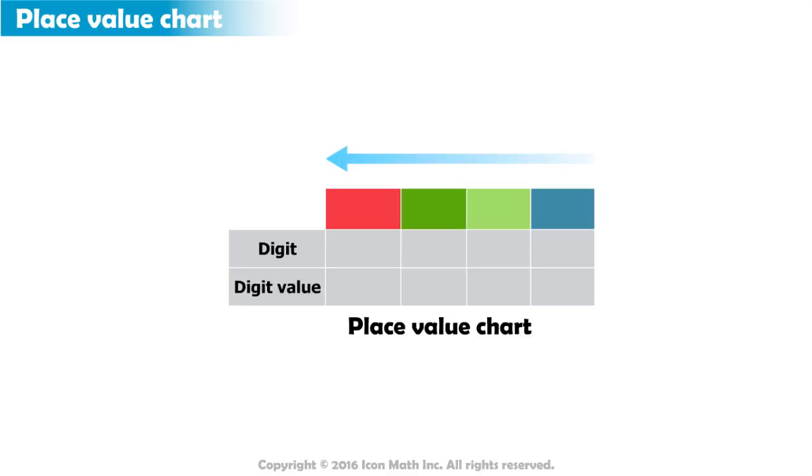Starting from right to left, the first place or position represents the ones. The second represents tens. The third represents hundreds. And the fourth represents thousands.